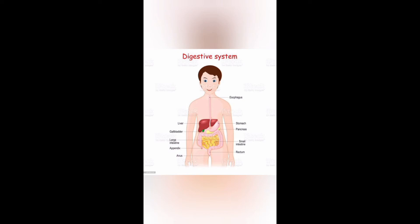Third is the stomach. The stomach is made of muscles; it further grinds the food, and digestive juices in the stomach mix with the food so the food particles change into a fine paste. Fourth is the small intestine — from the stomach the food goes into the small intestine, where digestive juices further digest the food. The digested food is then absorbed into the blood, which takes it to different parts of the body.